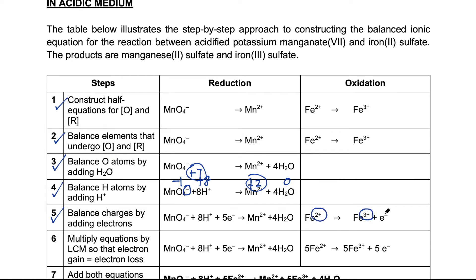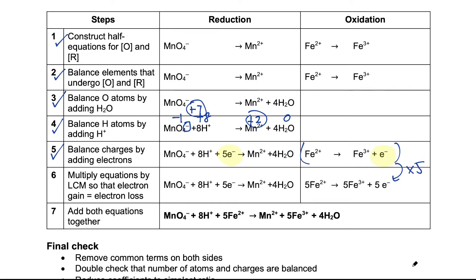For the oxidation equation, the left is 2+ and the right is 3+, so I add 1 electron to make the charges equal on each side. In any redox reaction, the number of electrons gained must equal the number of electrons lost. The reduction equation requires 5 electrons but the oxidation equation only gives out 1, so we find the lowest common multiple — which is 5 — and multiply the entire oxidation equation by 5.